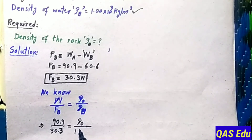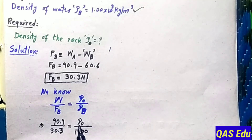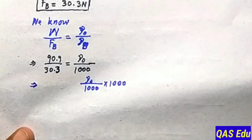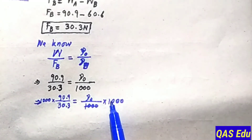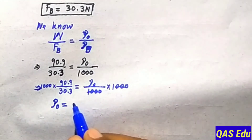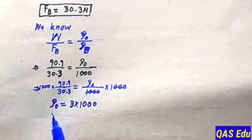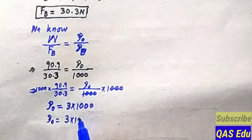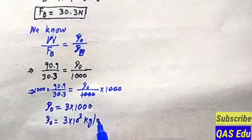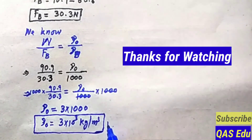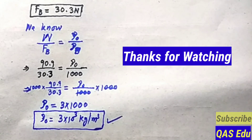Substituting: (90.9 ÷ 30.3) × 1.00 × 10³ equals 3.00 × 10³ kg/m³. That is the density of the object — the density of the moon rock.